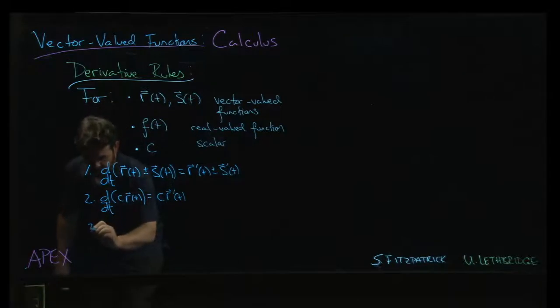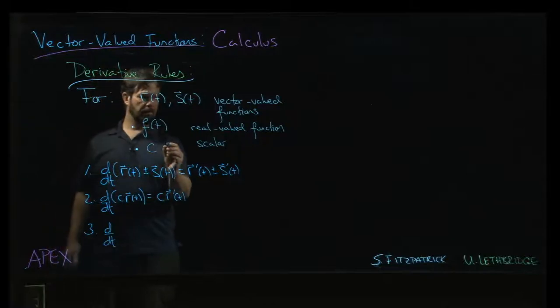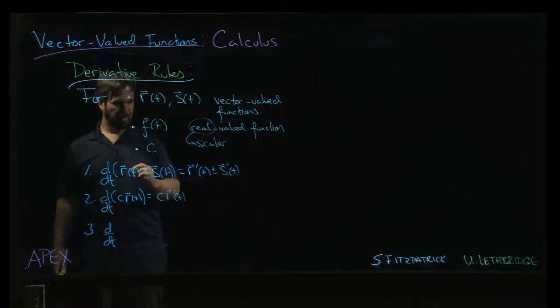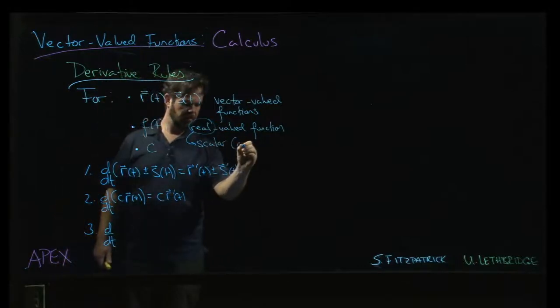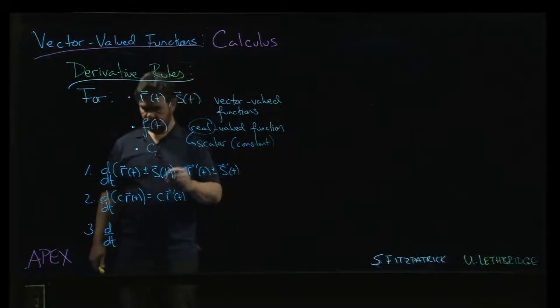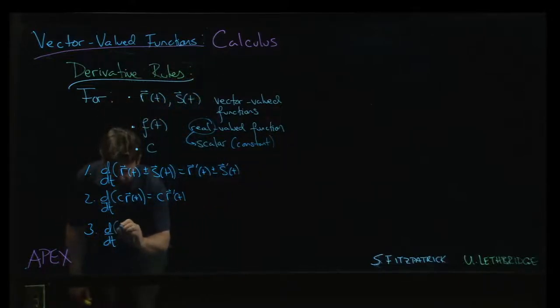We could also have a variable scalar multiple. A real-valued, we can think of real as really just meaning scalar-valued. So this scalar here, that's a constant, c is a constant. But we could also have a scalar-valued function, a real-valued function